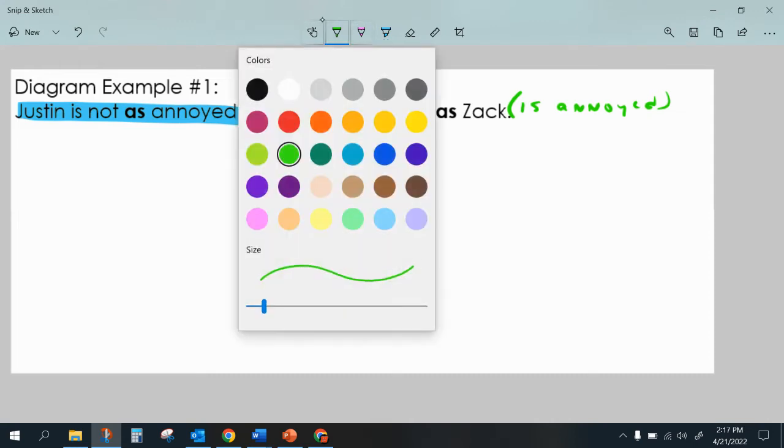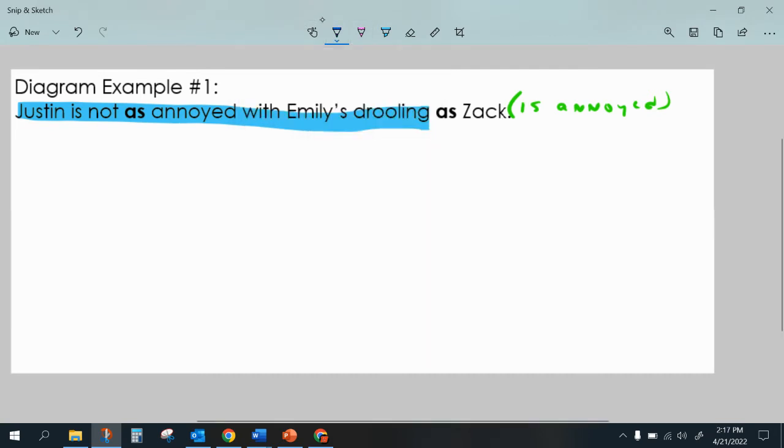So my first sentence, which is about Justin, I'm going to change my color here because it's blue. And so I have a sentence which says 'Justin is annoyed.' So here's Justin. I'm going to treat 'is annoyed' as passive voice. I think it would just be easier.